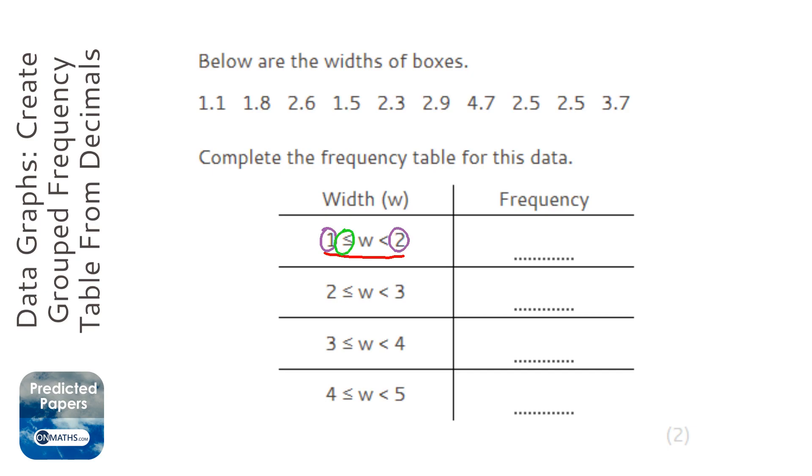It can be equal to 1, but it can't be equal to 2. So it can be anything up to 1.99999. So let's start off with this group and find out how many we have. So we're looking for numbers between 1 and 2.